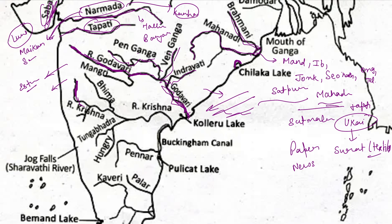Krishna originates from Mahabaleshwar, flows through Telangana, and drains into the Bay of Bengal. The left-bank tributaries of Krishna are Bhima river, Musi river, Kuleru river, and Munneru river. The right-bank tributaries include Koina river, Panchganga, and Dudhganga. Kolleru Lake is situated between the Godavari and Krishna rivers.